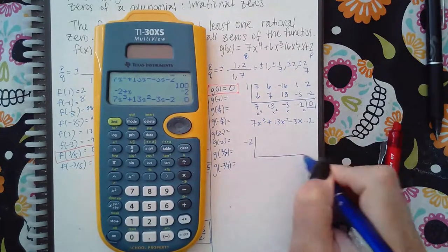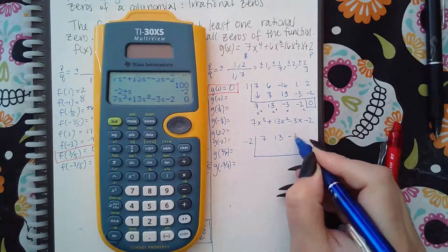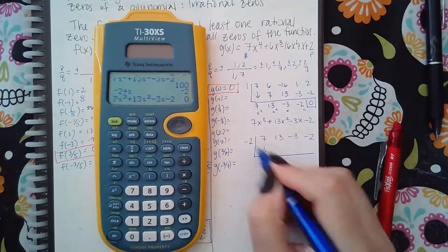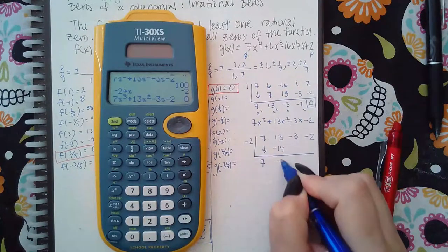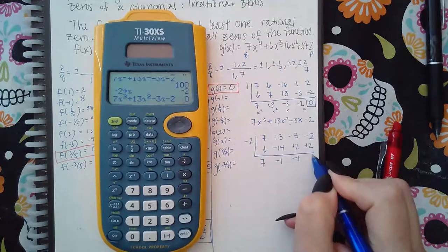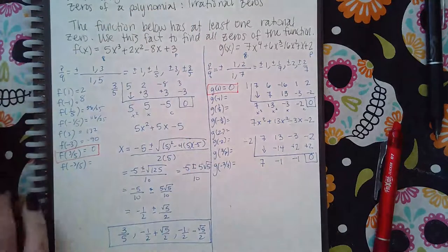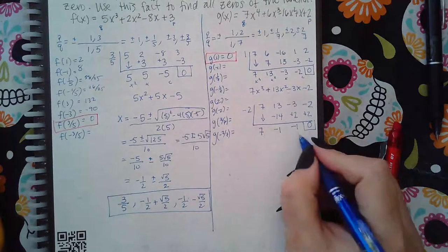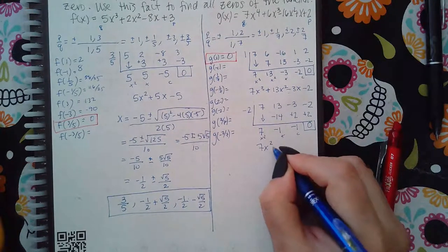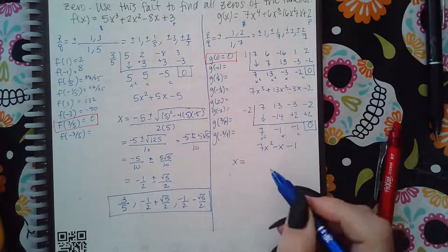Negative 2 works, so we do synthetic division again with coefficients 7, 13, negative 3, and negative 2. Bring the 7 down; get negative 14, then negative 1; positive 2, then negative 1; positive 2, and remainder 0. Now I do have a quadratic — the remaining factor is 7x² - x - 2 — so I can apply the quadratic formula to get the last two answers.